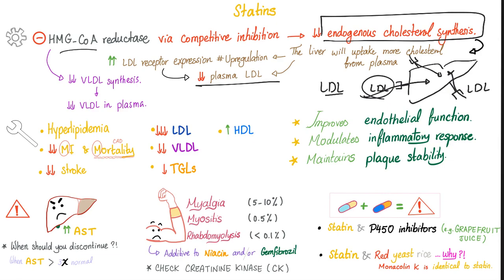Mission accomplished. Also, when you inhibit HMG-CoA reductase, you inhibit VLDL production — if there's no cholesterol in the liver, there's no VLDL in the plasma. Clinical uses of statins for hyperlipidemia: reduce recurrence or risk of MI, decrease mortality, decrease coronary artery disease and strokes. They reduce plasma LDL significantly, reduce VLDL and triglycerides, and may raise HDL. Statins also improve endothelial function, modulate inflammatory response, and maintain plaque stability in the vessel wall.